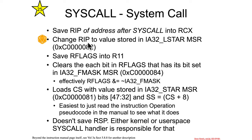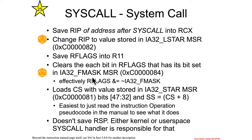So that MSR holds the kernel's RIP value. Then it saves off RFlags into the R11 register. And then an interesting bit of configuration happens here: the RFlags register will be masked against the IA32_Fmask MSR. Any bit that is set to one in this MSR will be cleared in RFlags at the time that it gets into kernel space.